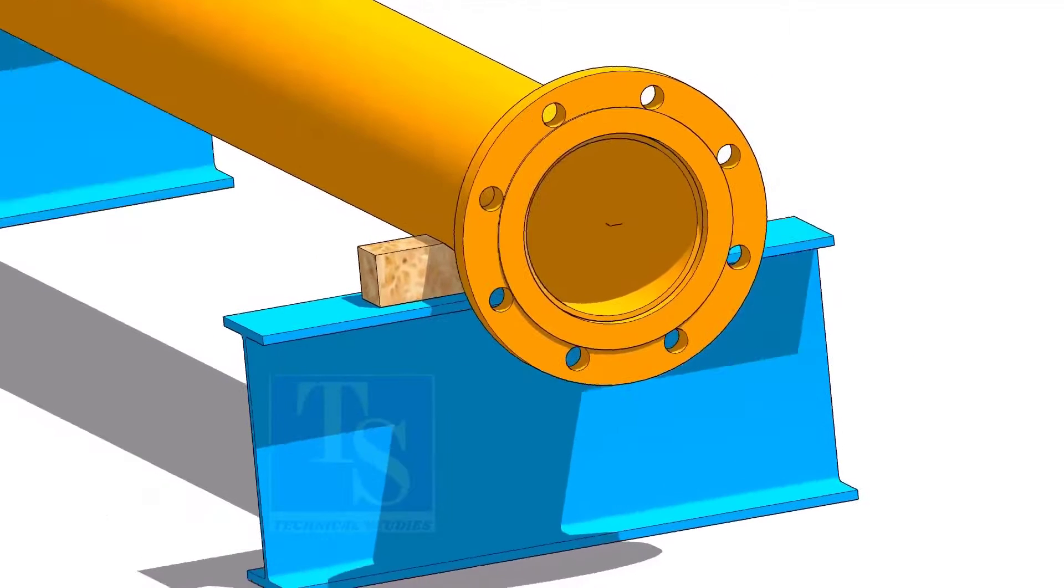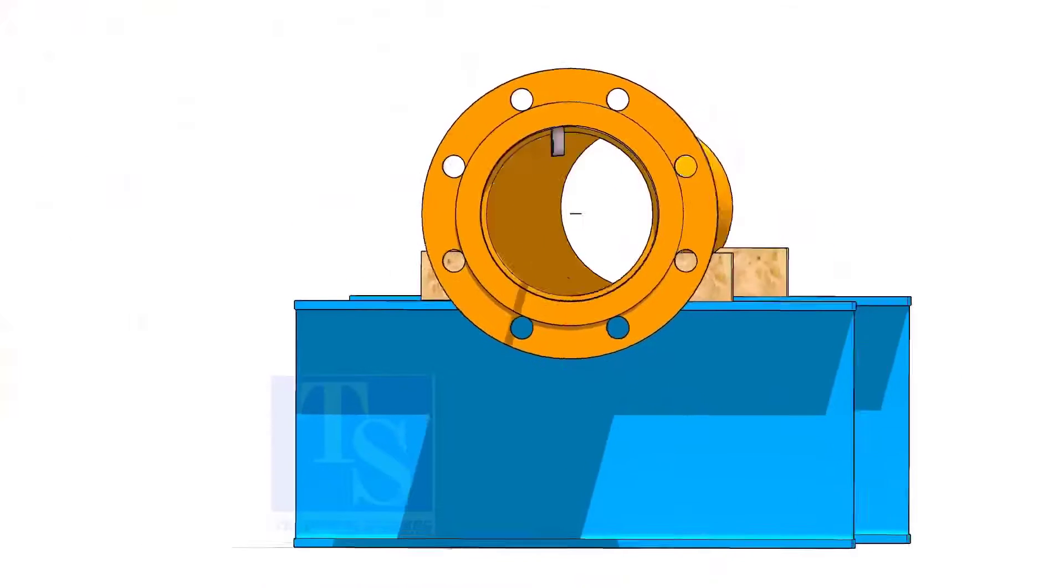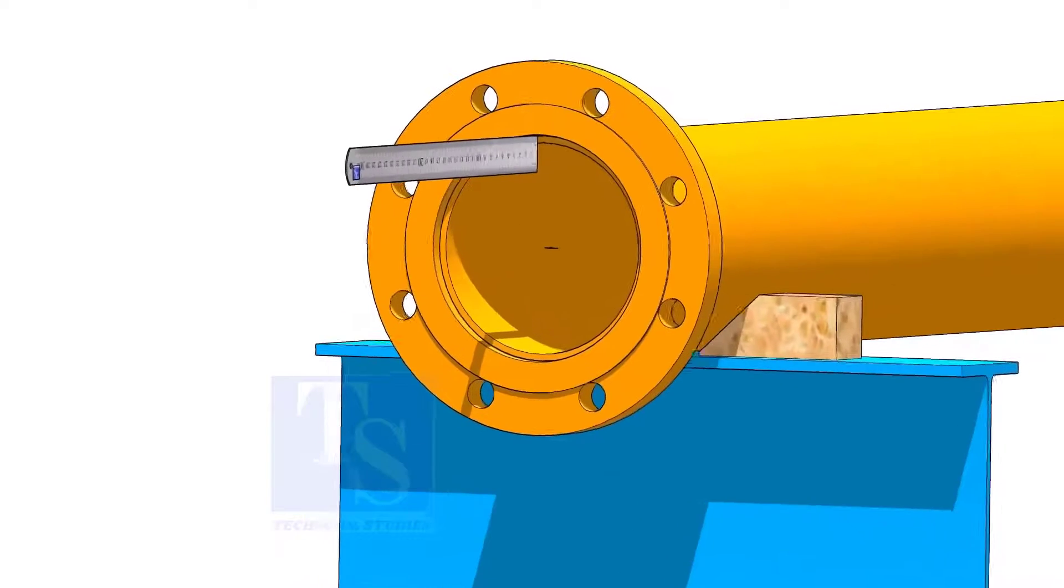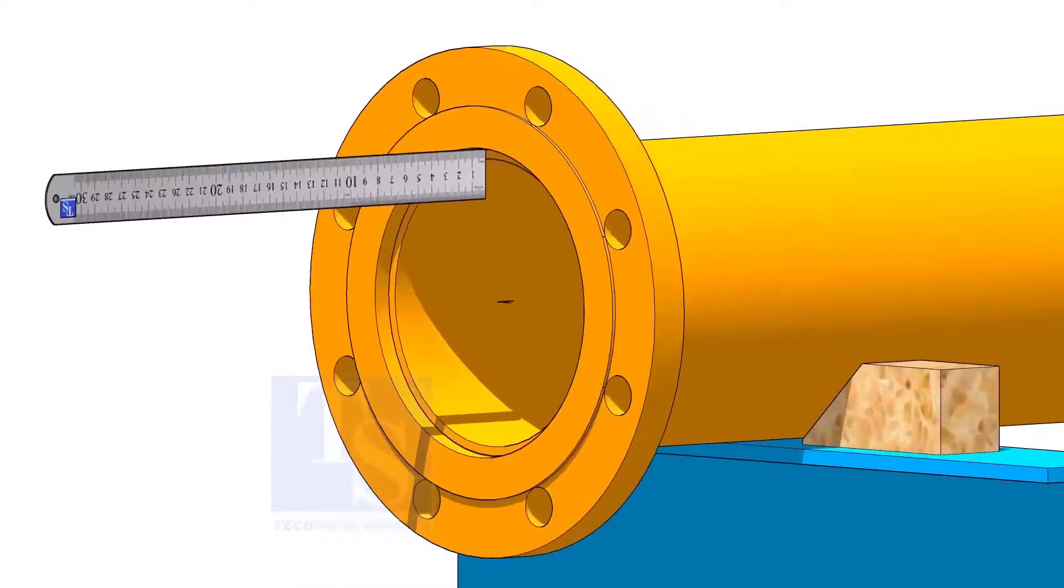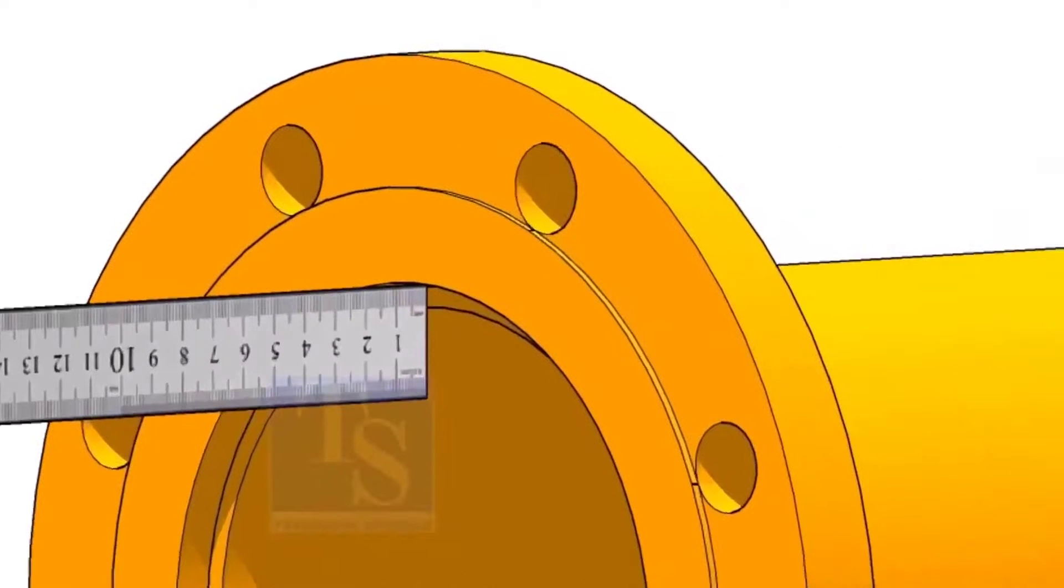The hole centers of the flange shall be roughly vertical. The pipe face to the flange face, the clearance shall be the minimum thickness of the pipe. Assume that the thickness of the pipe is 6 mm. The clearance shall be a minimum of 6 mm.